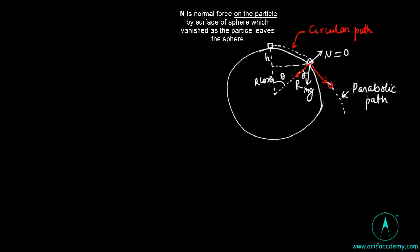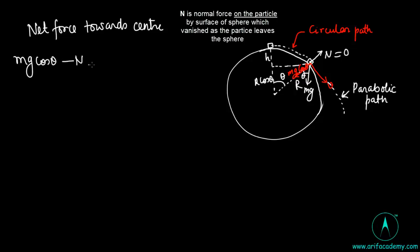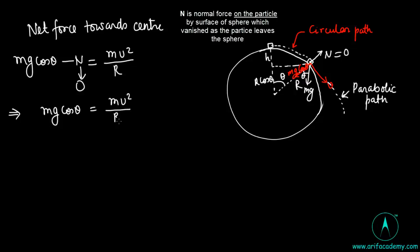At the point where it leaves the sphere, the normal force is zero. The force on the particle is mg directed downward, and its component along the radius toward the center is mg·cos θ. Applying Newton's second law toward the center: mg·cos θ − N = mv²/r. Since N = 0, this gives mg·cos θ = mv²/r, so v² = gr·cos θ. This is equation number 2.